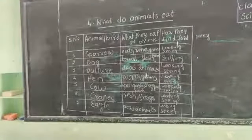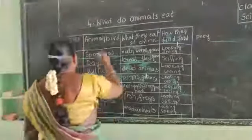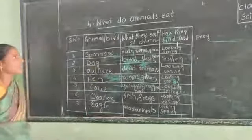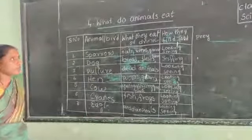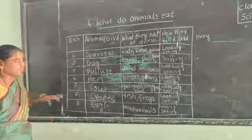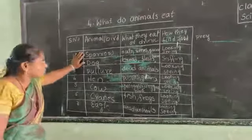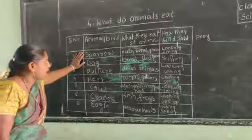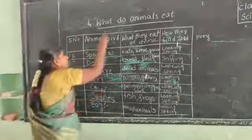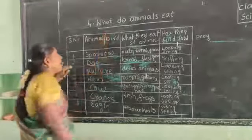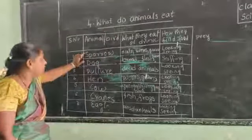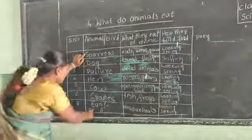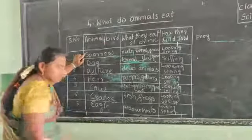So once again, let us take a recap of what we have discussed today — 'What do animals eat.' We have taken some animals and birds: sparrow, dog, vulture, hen, cow, crane, and eagle.